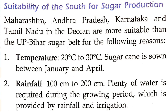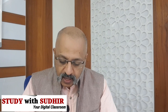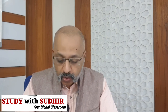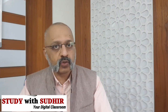In contrast, South India — including Maharashtra, Andhra Pradesh, Telangana, Karnataka, and Tamil Nadu in the Deccan — is more suitable for sugar production than the UP-Bihar belt. Reason one: temperature stays around 20 to 30 degrees Celsius in South India generally, and sugarcane is grown between January and April. Reason two: rainfall of 100 cm to 200 cm provides plenty of water during the growing period, supplemented by irrigation facilities.